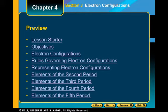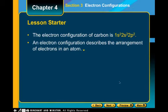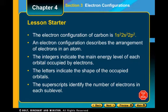Today we're going to go over electron configurations. Electron configurations are basically the address we talked about yesterday, where we're going to know exactly where electrons are located. Here is the electron configuration for carbon: 1s2, 2s2, 2p2.